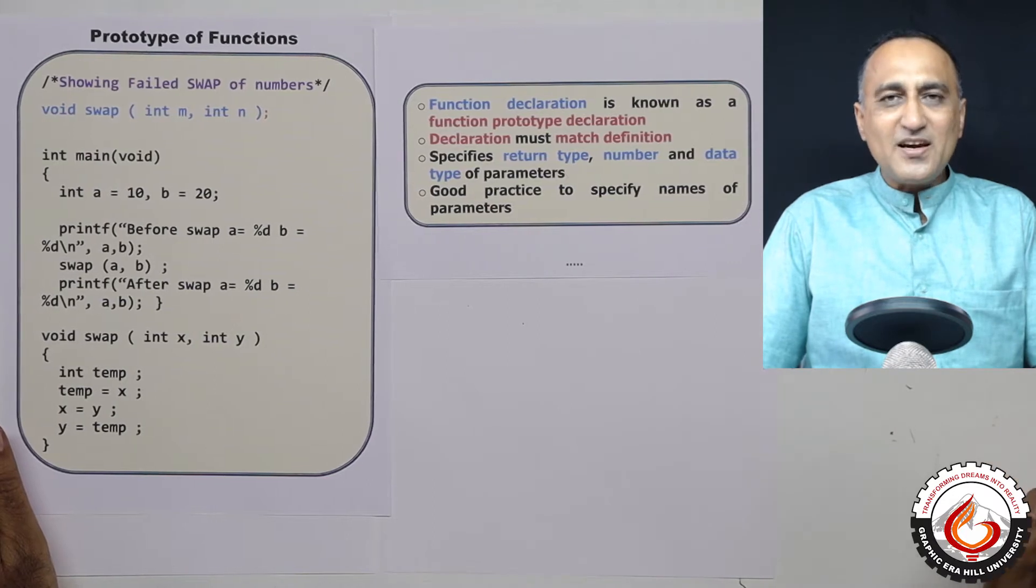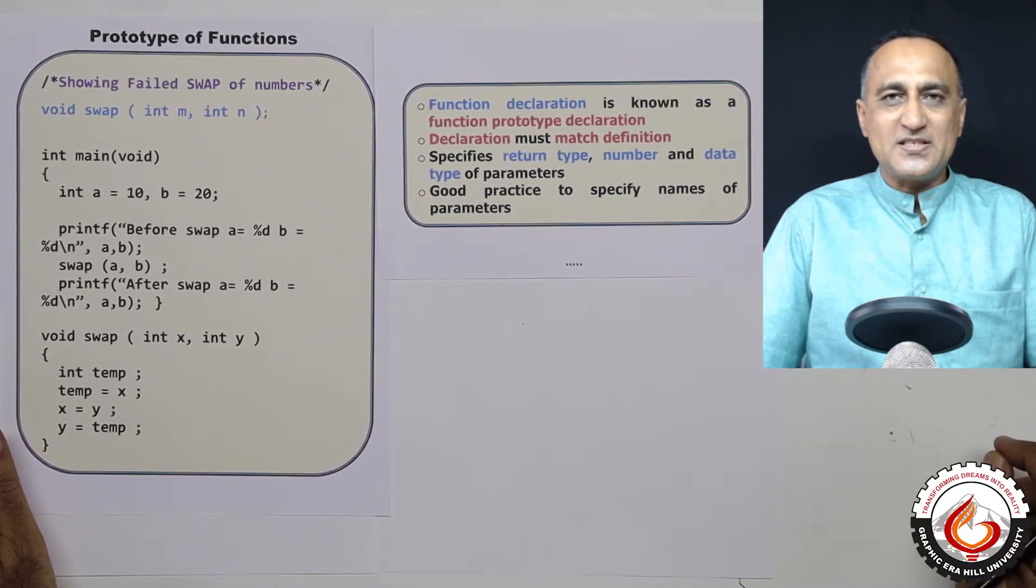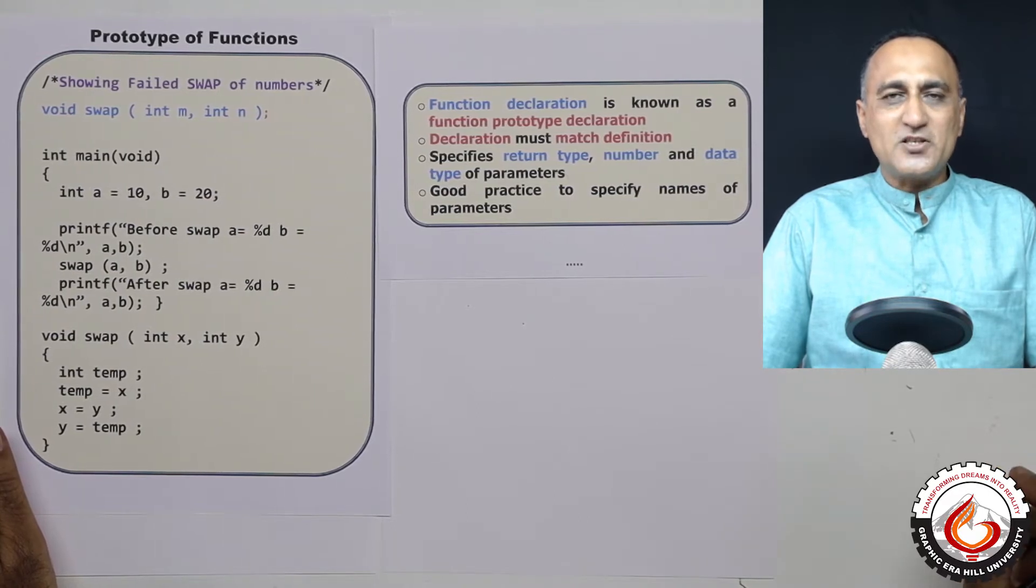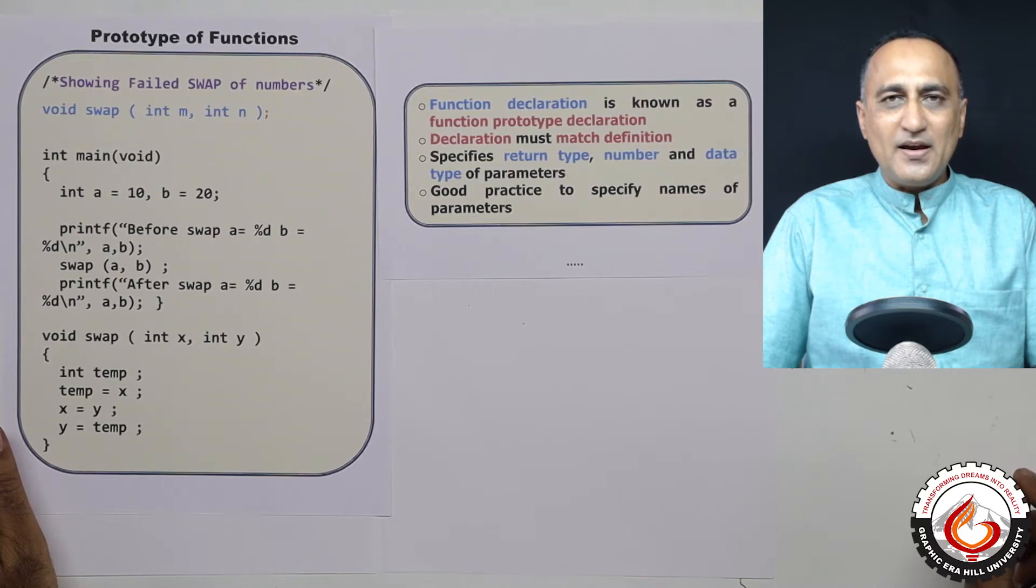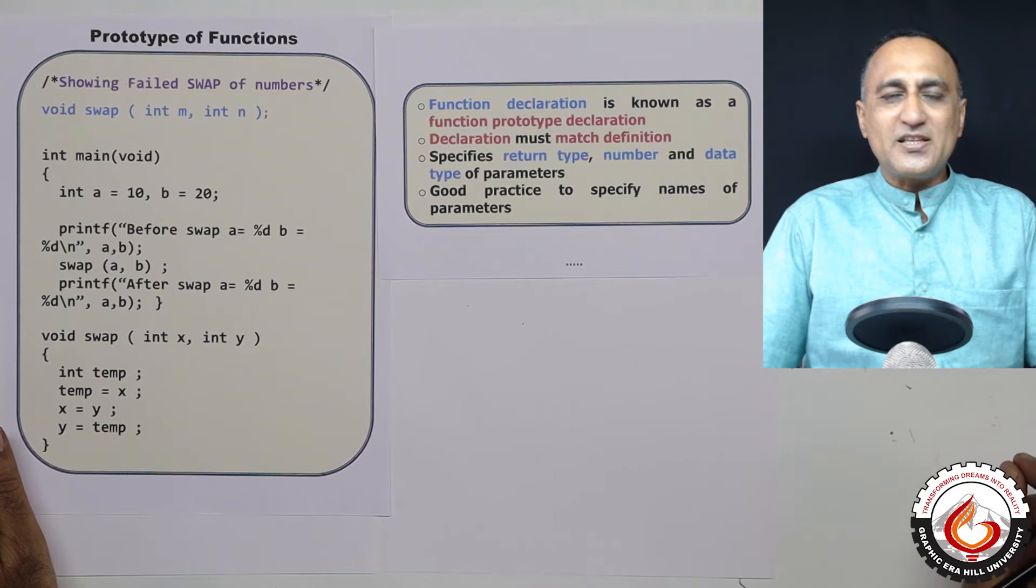Now since we are writing our own functions, C requires us that before we call the function, it is important to inform the compiler as to what is the function prototype. Prototype is nothing but it is known as the function blueprint.